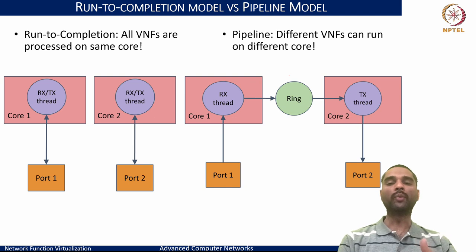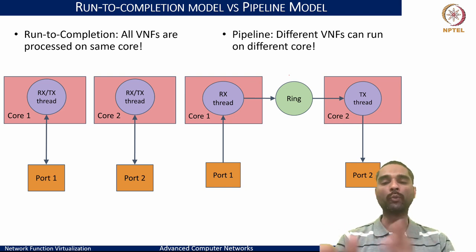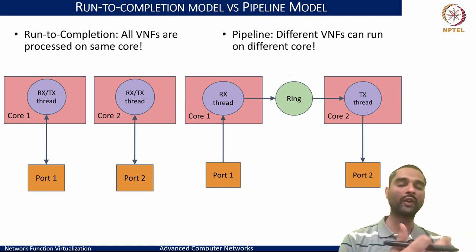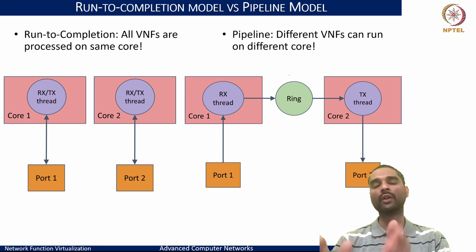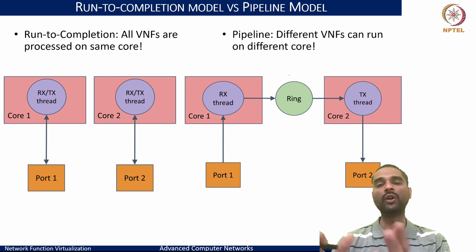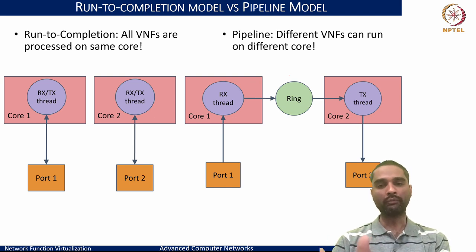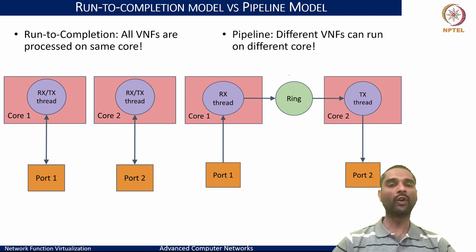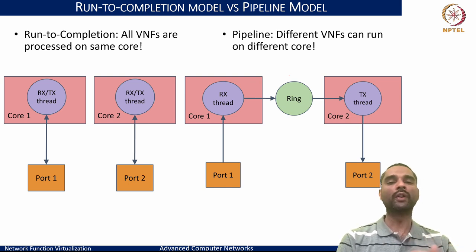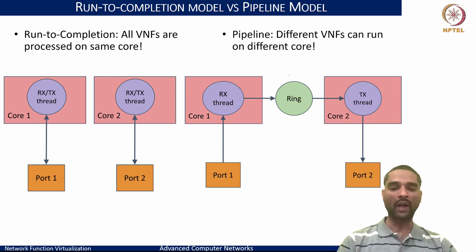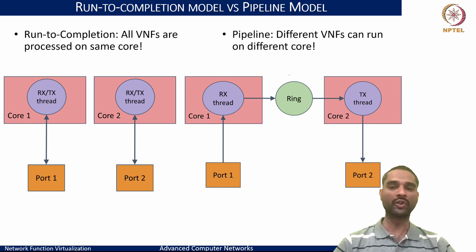The pipeline model's overheads are ring buffer updates and thread context switches, as opposed to run-to-completion. However, the flexibility it provides is far greater and more practical for deploying heterogeneous network functions. Both models have been adopted in research and industry, with run-to-completion offering higher raw performance and the pipeline model offering greater flexibility, augmented by latency-hiding techniques like batching.